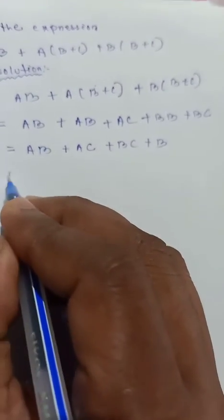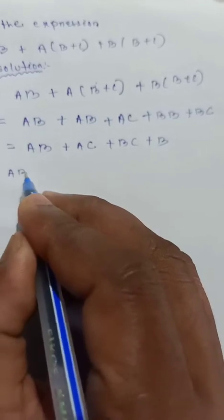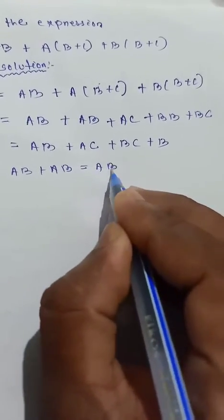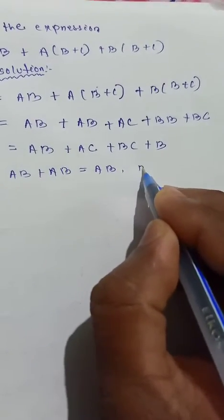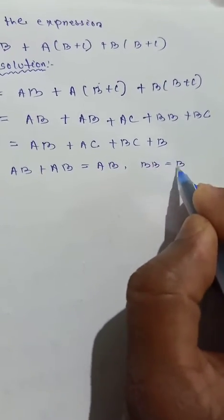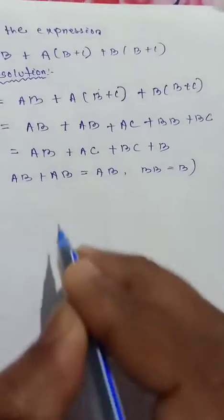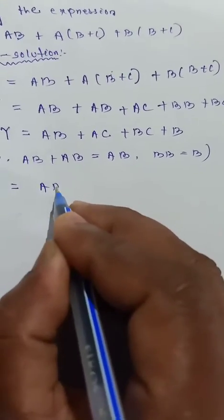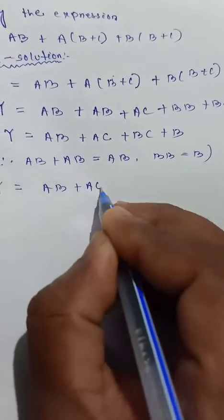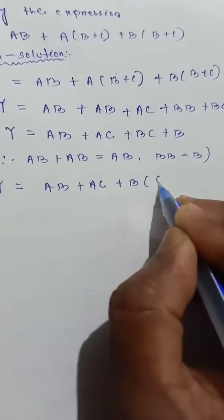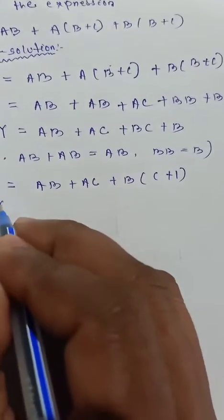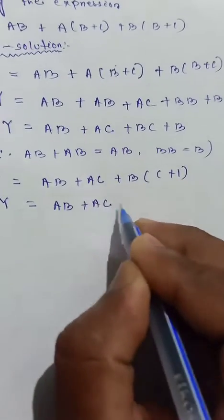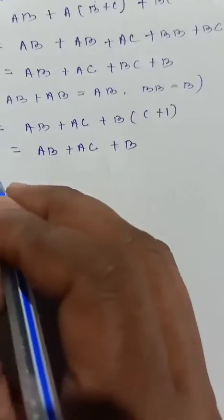I am using: ab plus ab is nothing but ab, and bb is equal to b. So the output y is equal to ab plus ac, now taking b common: b(c plus 1). So y is equal to ab plus ac plus b.